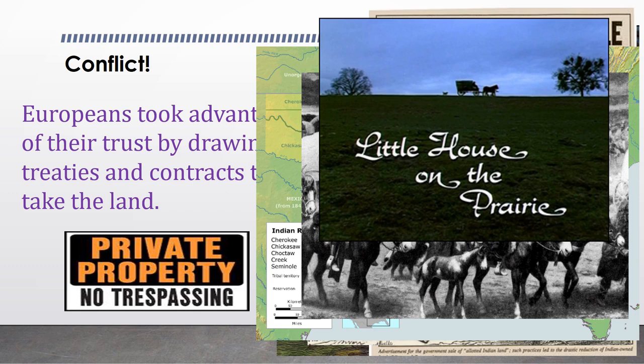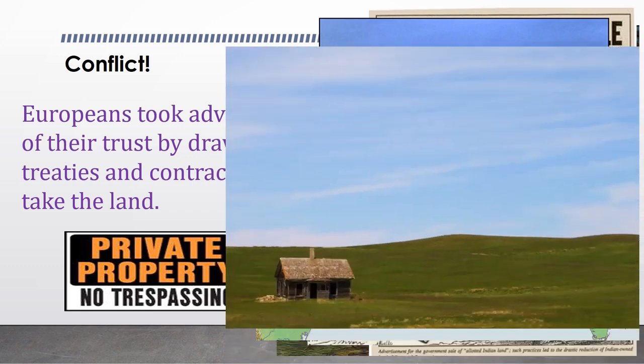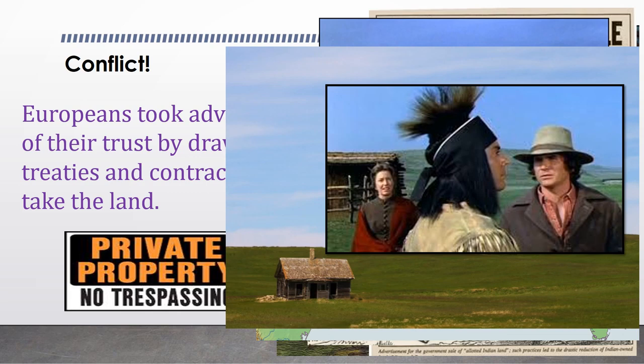One of these families you may be familiar with from the book and TV series Little House on the Prairie. Based on a true story, the Ingalls family purchased a plot of land from the government and settled it as their homestead in Kansas. If you have ever watched the pilot episode, you know that the Ingalls family encounters both friendly and hostile Indians while living there, and in the end they are forced to leave because the government determined their property to indeed be on Indian land after all.